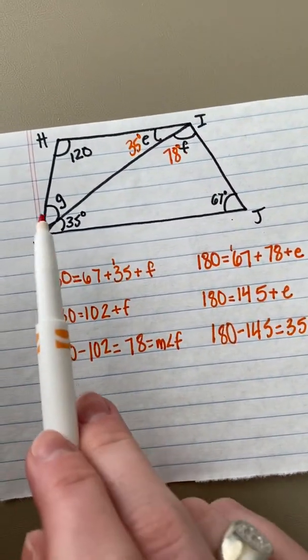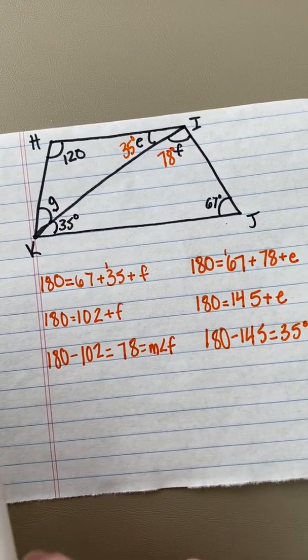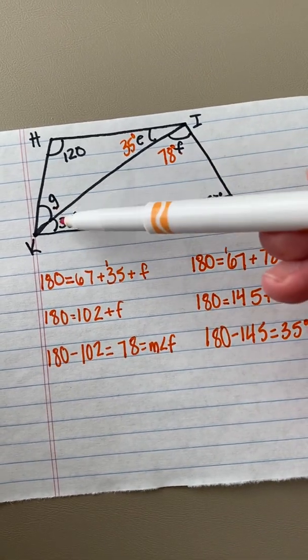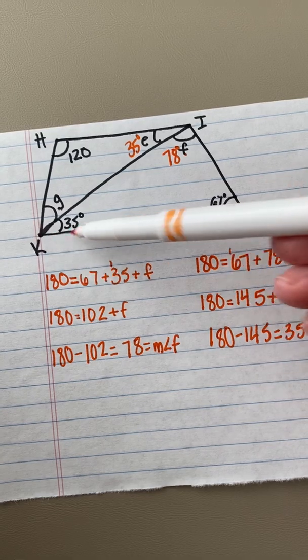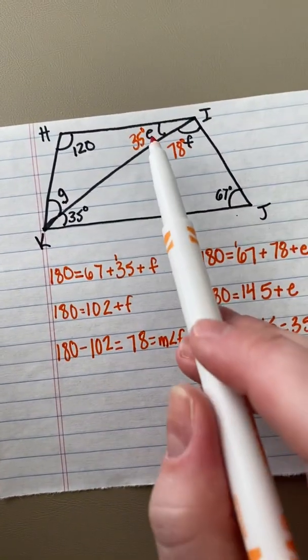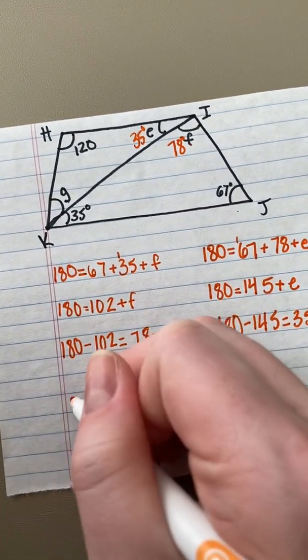So now I have just one missing angle, which is angle G, and I could have solved this already had I used the same steps as I did over here. Since I had two of the three parts that equaled this sum of 180, I could have already solved for that as well. But I'm going to use the property of a triangle to solve for it up here.